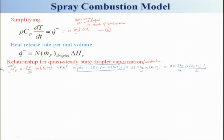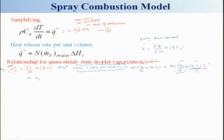The burning rate constant is K = 8·k_g/(ρ_l·c_p) · ln(B_c + 1), already derived for quiescent atmosphere conditions. Therefore, ṁ_f can be written simply as ṁ_f = π·d·ρ_l·K/4, where K = 8·k_g/(ρ_l·c_p) · ln(B_c + 1). This is equation 7.